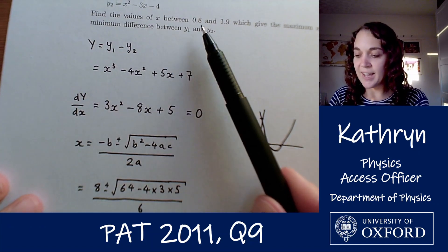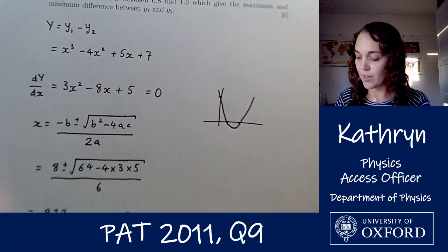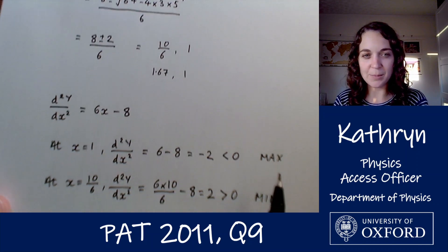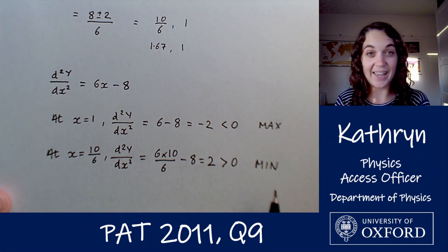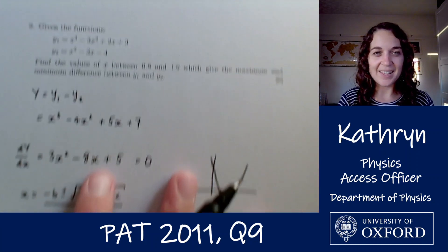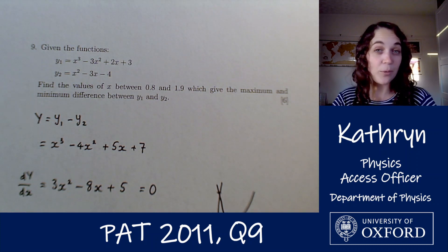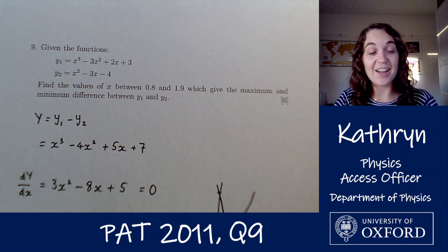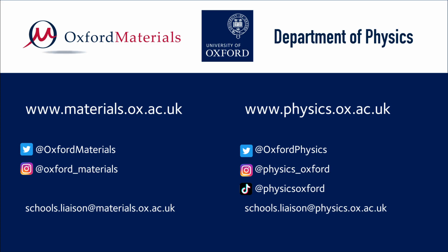So the two values of x between 0.8 and 1.9 which give the maximum and minimum values are x equals 1 which gives us a maximum and x equals 10 over 6 or 1.67 which is a minimum. So that's how I would go about solving this problem. There will be other ways to tackle it but this is the way that makes the most sense to me. I hope that has been useful and I hope we see you again soon. Thanks for joining us.